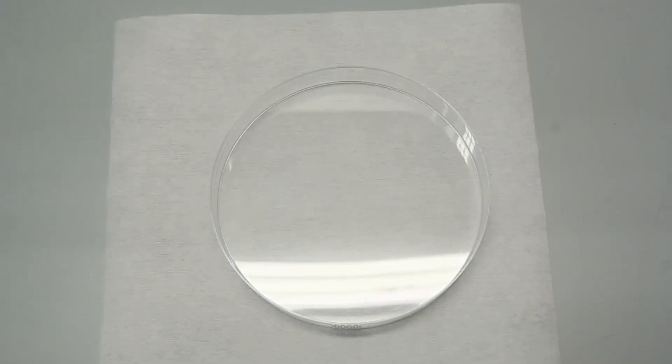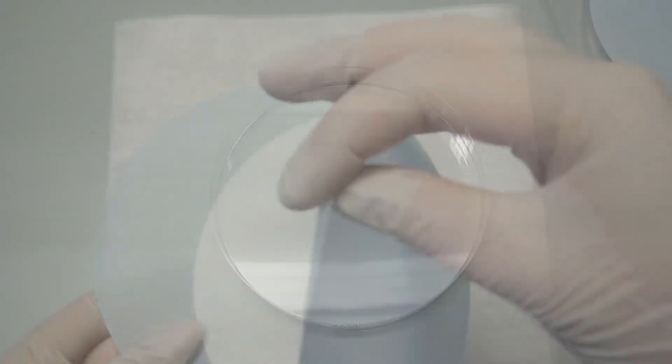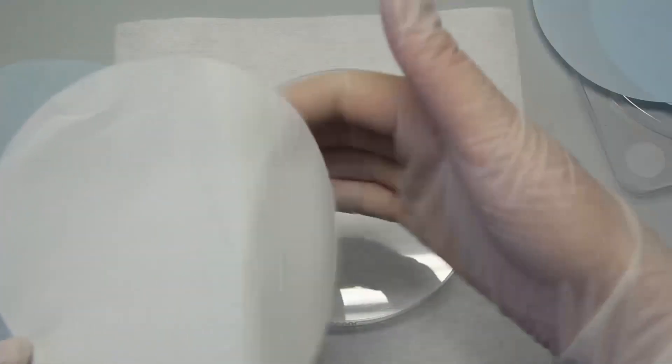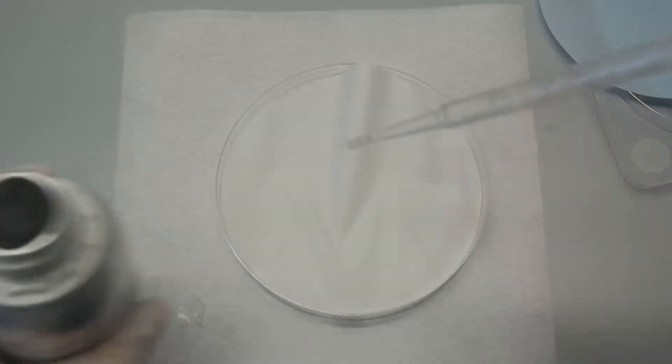Take a large Petri dish and place a high porosity PTFE sheet inside. Add an excess of ionic liquid.